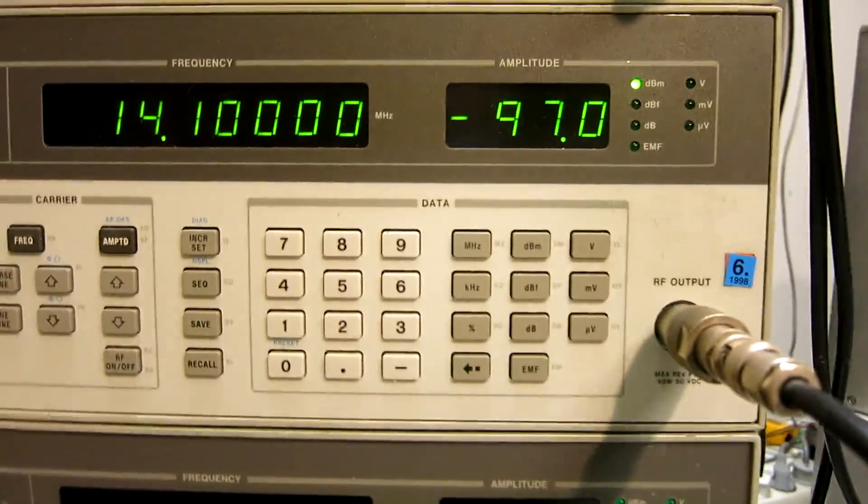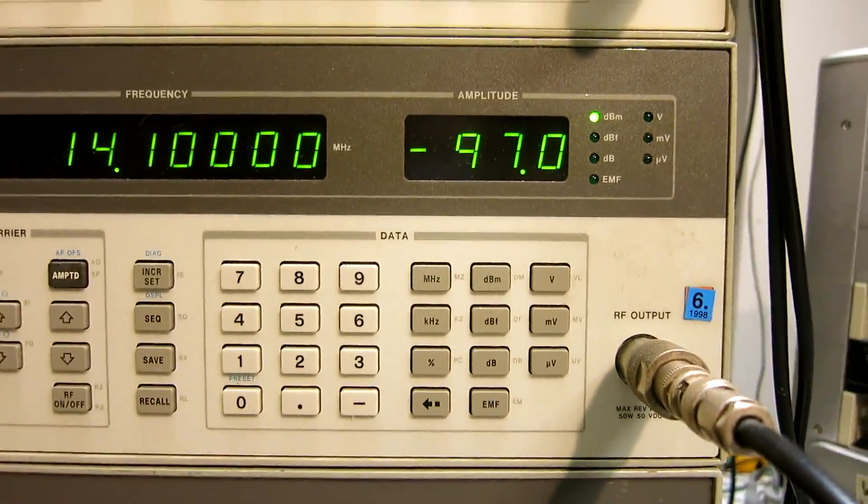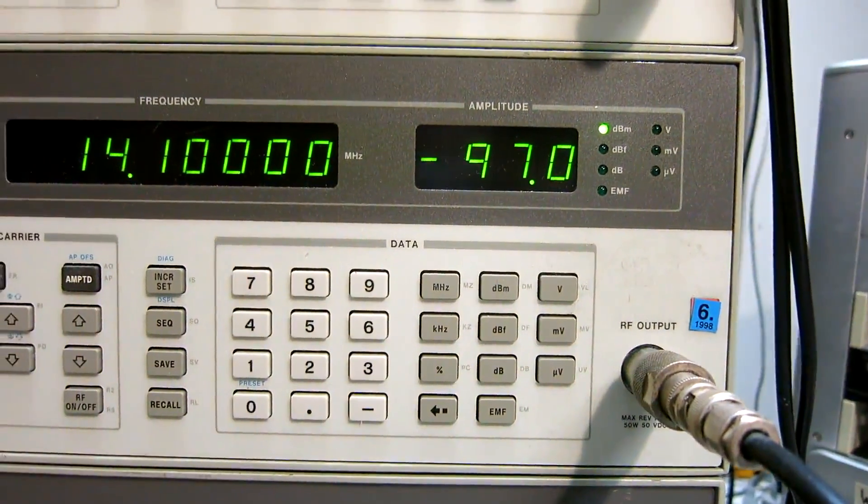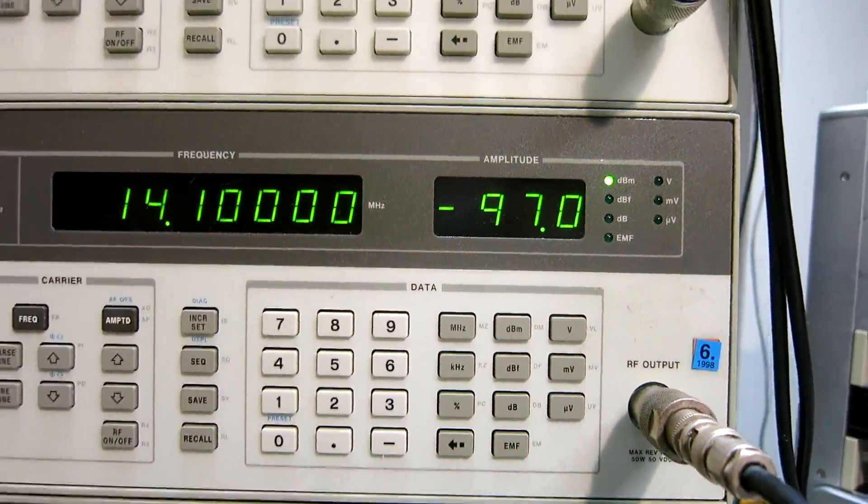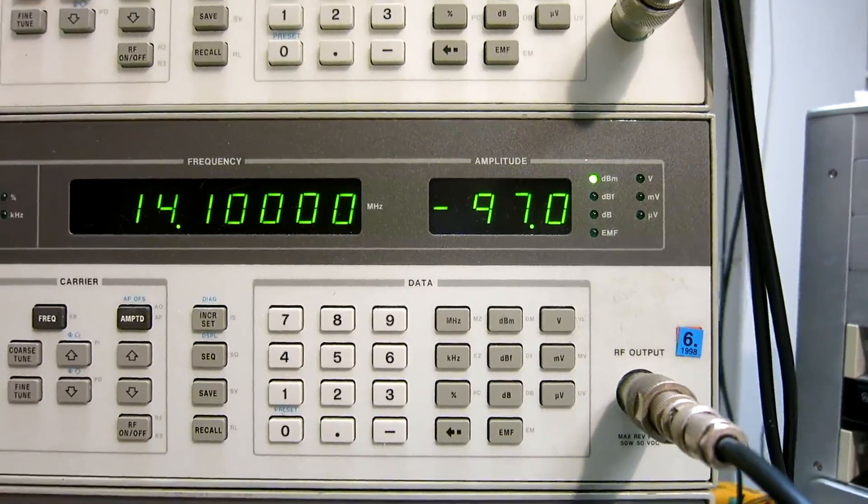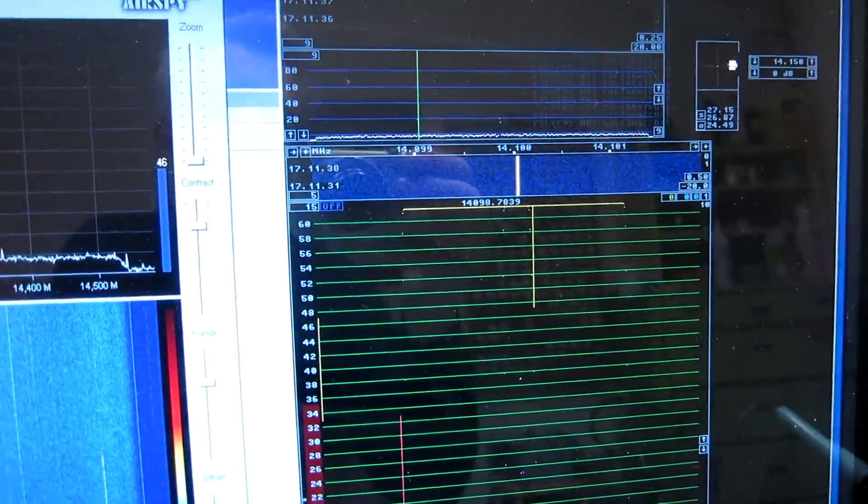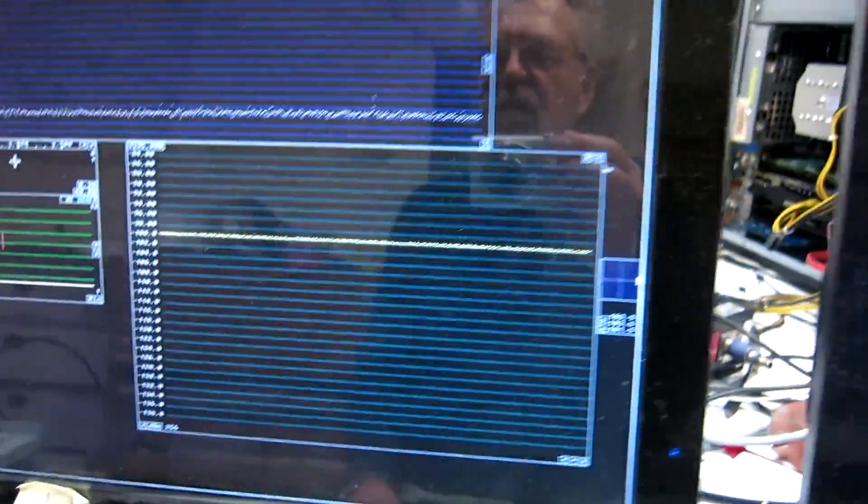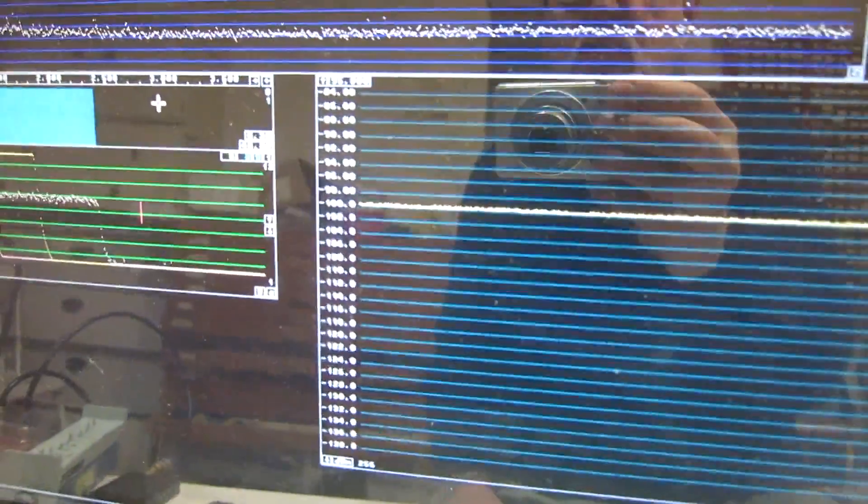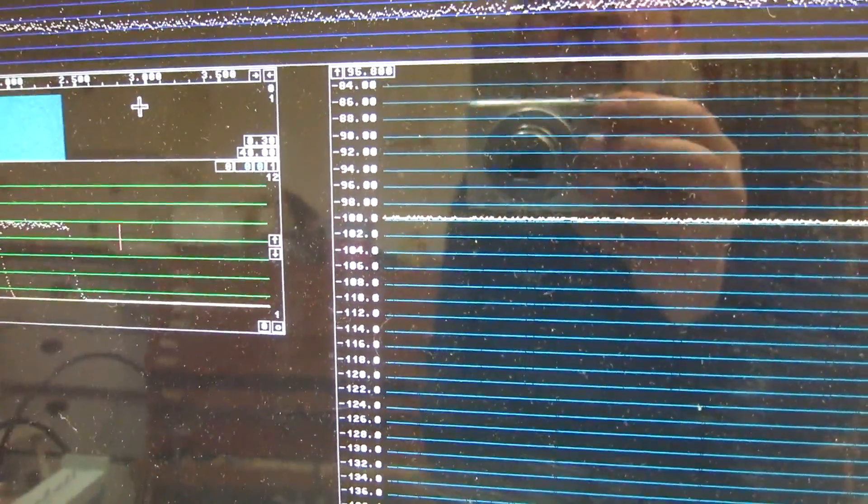The generator is set to minus 97 dBm, which means that the signal, as it enters the receivers, has a level of minus 100 dBm. Right now I'm listening to Linrad. It's set up here, and I have set the volume control for the S-meter to show minus 100 dBm.